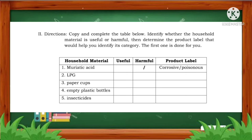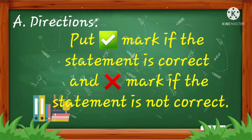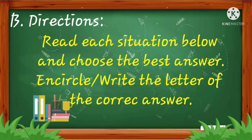You may now answer numbers 2, 3, 4, and 5. For your assessment on pages 6 to 7 of your module, you are going to put a check mark if the statement is correct and a cross mark if not — that is for letter A. For letter B, you are going to read each situation below and choose the best answer. You are going to encircle the letter of the correct answer.